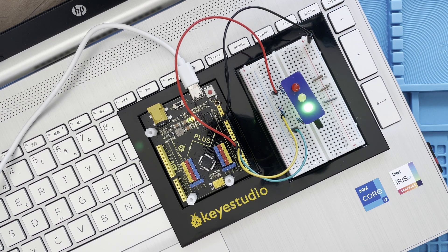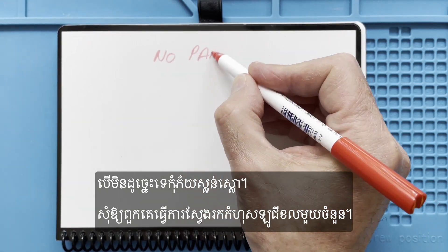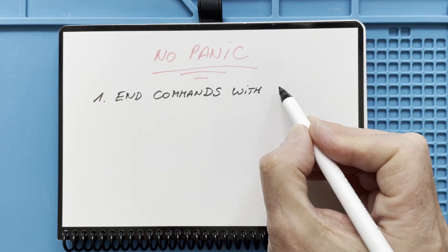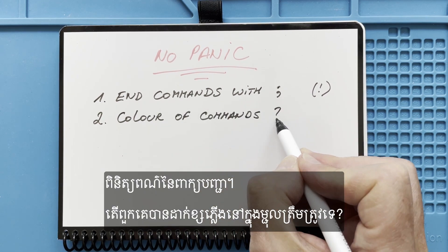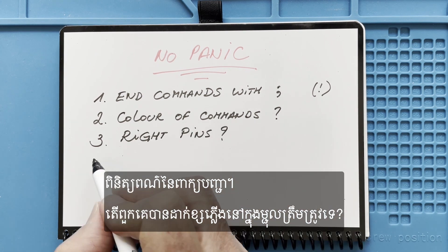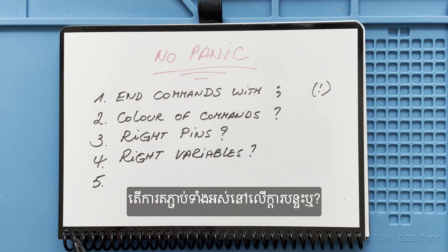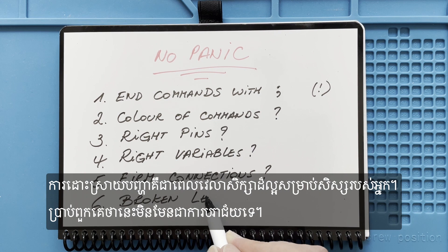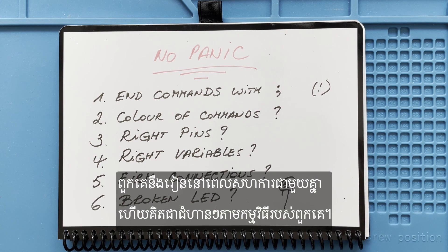Congratulations! If it works for your class, tell them they did a great job. If not, no panic — ask them to do some logical fault-finding. Did they end all commands with a semicolon? Did they type all commands correctly? Check the color of the commands. Did they put the wires in the right pin? Did they declare the right pin number as a variable? Are all connections on the breadboard firm? Is the LED not broken? Troubleshooting is a great learning moment for your students. Tell them that this is not a failure — they will learn while collaborating together and thinking logically, step by step through their program.